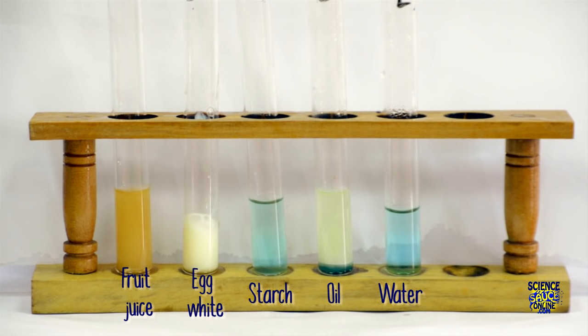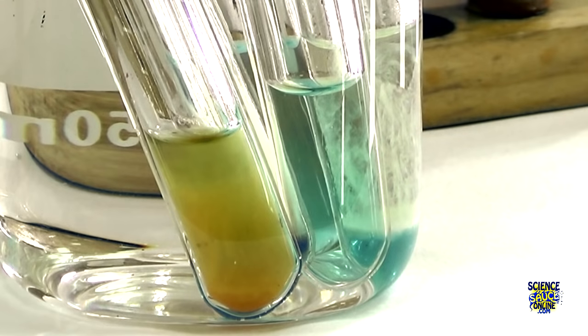When we put them back into the test tube rack we can see that fruit juice is the only one that's actually reacted to this suggesting that it contains reducing sugars.